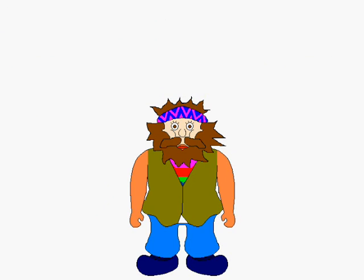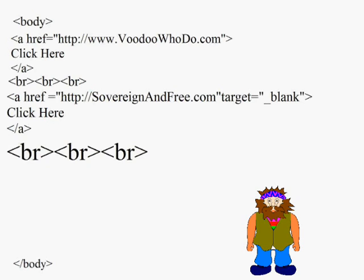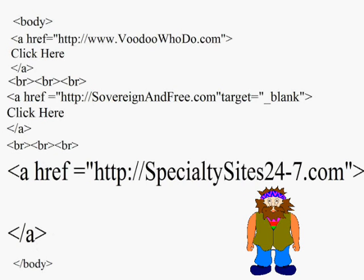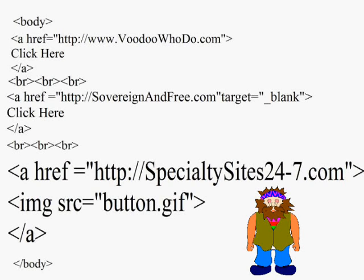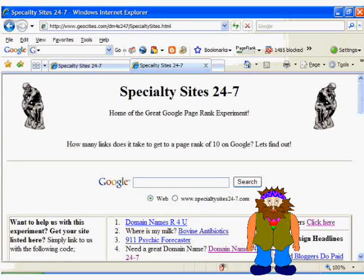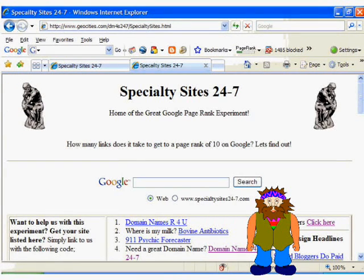Now I'll show you how to use an image as a hyperlink. So we add in a couple more page break tags, then add in our anchor href tags. For this demonstration we'll use www.specialtysites24-7.com. Then to add in the image, we just use an image source tag with the name of the picture file between the quotes. I'll use a picture that is stored in the same folder as our web page file. Save it, and when we open it up in our browser, we see our image shows up. When we click on that, we are taken to specialtysites24-7.com.